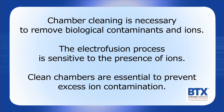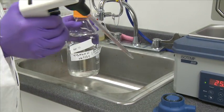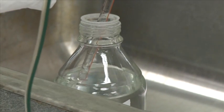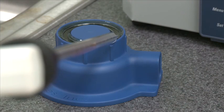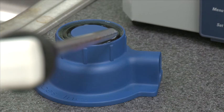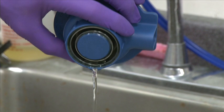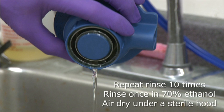Chamber cleaning is necessary to remove biological contaminants and ions. The electrofusion process is sensitive to the presence of ions, so clean chambers are essential to prevent excess ion contamination. The following cleaning process is recommended: immediately after use, rinse the chamber in reagent-grade water. Fill the chamber with 4% sodium hydroxide and soak for 5 minutes. Empty the chamber and rinse in reagent-grade water for 10 seconds. Repeat rinse 10 times. Rinse once in 70% ethanol. Air dry under a sterile hood.